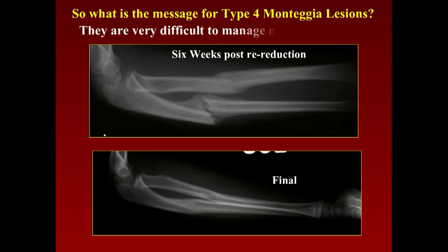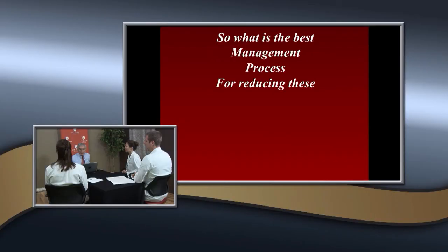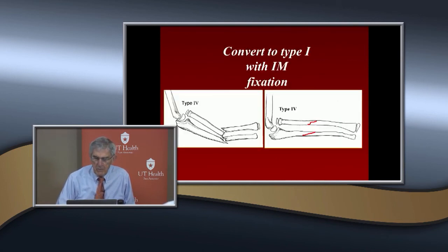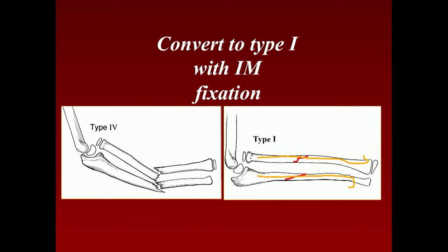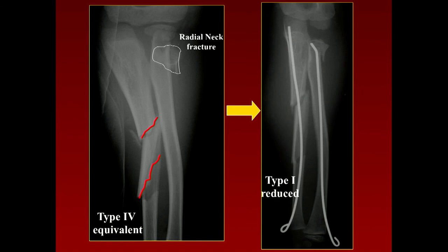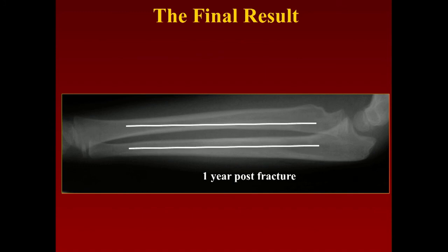The best approach for Type 4 is intramedullary fixation of both bones, converting it to a Type 1 — placing IM nails creates a lever arm, and then you treat it like a Type 1 lesion. An equivalent case showing olecranon and radial neck fractures treated with retrograde IM nails resulted in good radial head alignment and full supination and pronation at one year with complete remodeling.